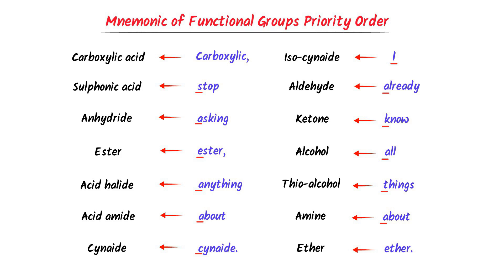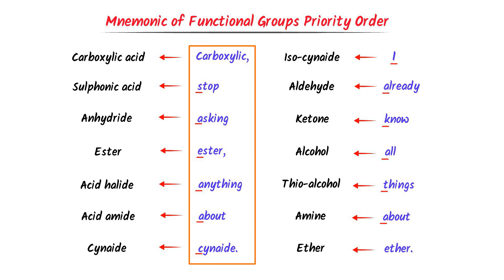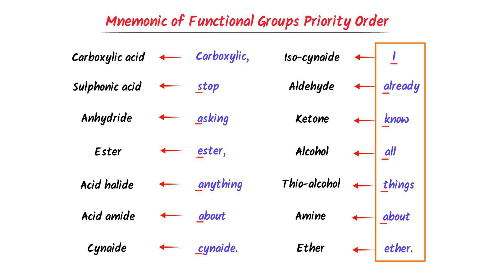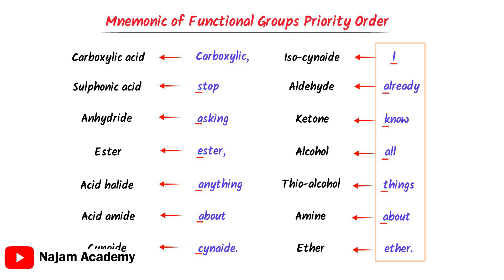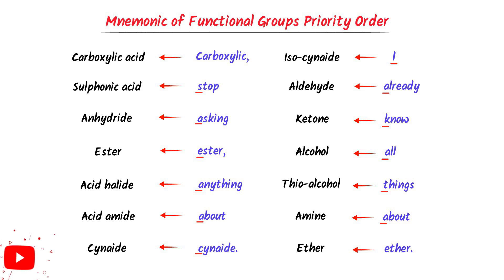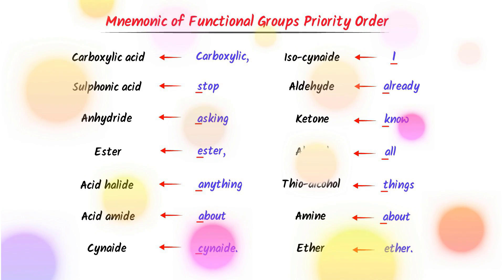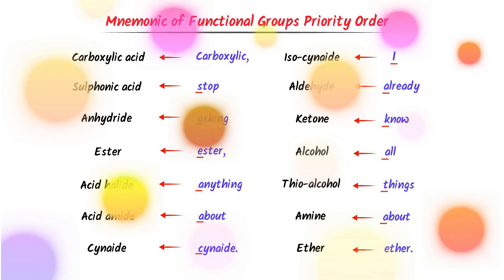Thus, using this mnemonic — carboxylic, stop asking ester anything about cyanide, I already know all things about ether — we can easily memorize the functional group's priority order. I hope that you will enjoy this easy trick.